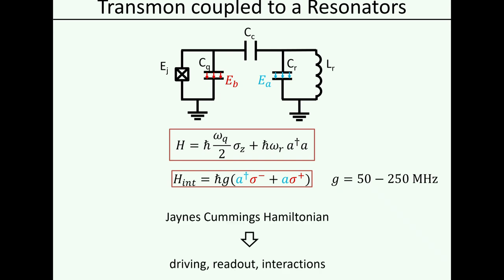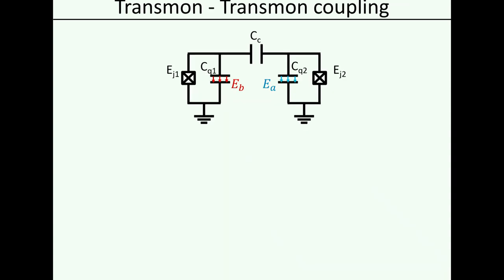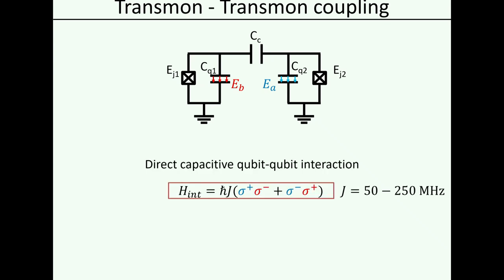That Hamiltonian most of you are familiar with — it's the famous Jaynes-Cummings Hamiltonian. We can use it in the dispersive regime to read out our qubits, use the resonator to mediate interactions and to drive the qubits. I can also replace the resonator with another qubit and write down the same coupling capacitance, which means I can capacitively couple qubits and mediate interactions in that way too. Instead of a-dagger and a I now get sigma-plus and sigma-minus, so qubits which are capacitively coupled can on resonance exchange excitations with this flip-flop interaction. Interaction strength can again be around 50 to a few hundred megahertz.